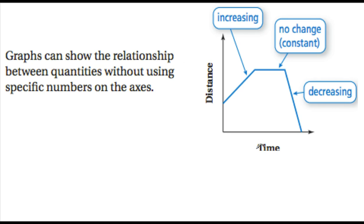In this graph you have time and distance. You're always starting out at the origin. What is time doing as you move to the right? It's increasing. And what's happening to distance as you move up? It's also increasing. So the basics: if you're moving to the right on the x-axis, you are increasing; if you're moving up on the y-axis, you are increasing.